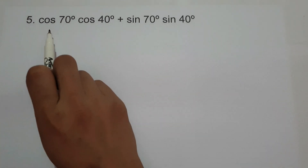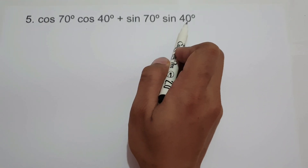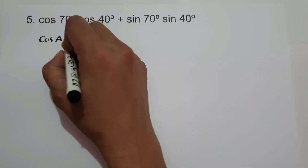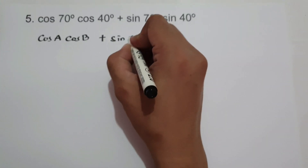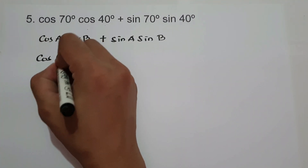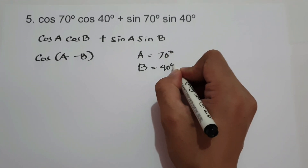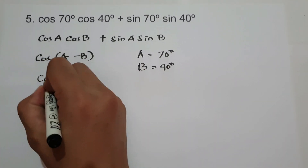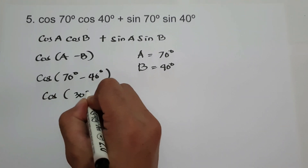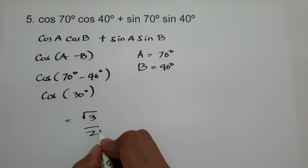On number 5, we have cosine 70° times cosine 40° plus sine 70° times sine 40°. Since this is in the form cosine A times cosine B plus sine A times sine B, we recognize it as cosine(A-B), with A = 70° and B = 40°. So we have cosine(70° - 40°) = cosine 30° = √3/2, and this will be our answer.